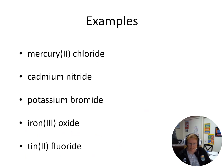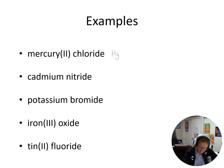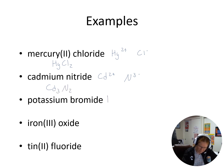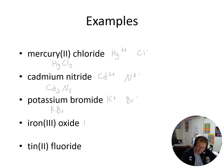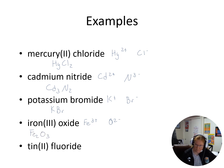Mercury two chloride: mercury is a transition metal with a Roman numeral two, meaning plus two. Chloride is group 7A, minus one. Charge balancing gives HgCl₂. Potassium is group 1A, plus one; bromine is group 7A, minus one — that's potassium bromide, KBr. Iron three with oxide: the Roman numeral three tells me iron has a plus three charge; oxygen is group 6A, minus two. Tin two with fluoride: the Roman numeral tells me it's a plus two; fluoride is group 7A, minus one.